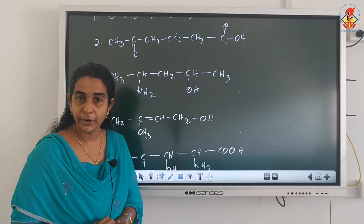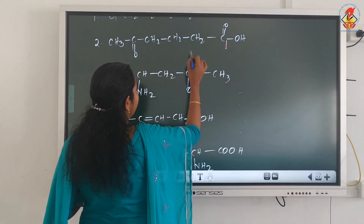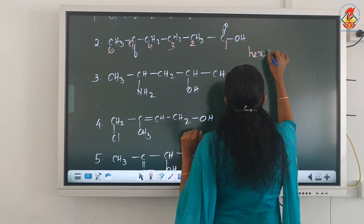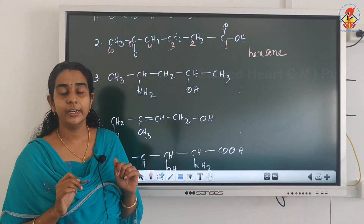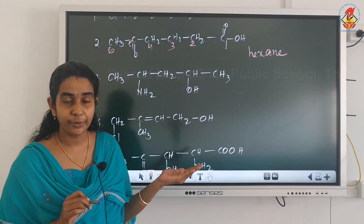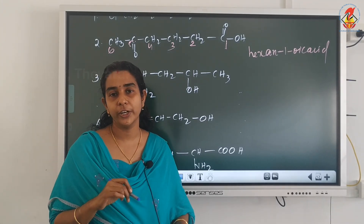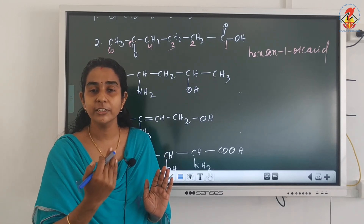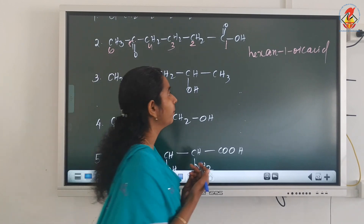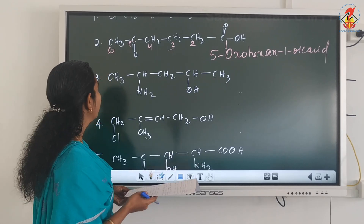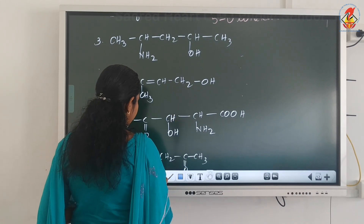COOH is a terminal functional group, so it is numbered as carbon 1. Then 2, 3, 4, 5, 6 — six carbons means the word root is hex. They are all singly bonded, so A and E. COOH goes as secondary suffix: oic acid. Remove the last E. The keto group at position 5 goes as a prefix — when keto comes as prefix, it is 'oxo'. So the name is 5-oxohexan-1-oic acid, which is the same as 5-oxohexanoic acid.